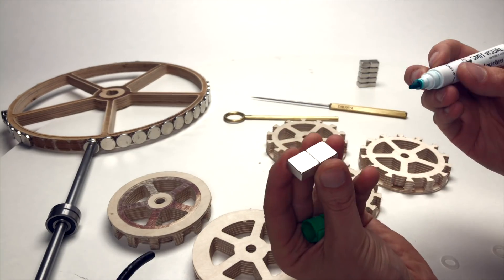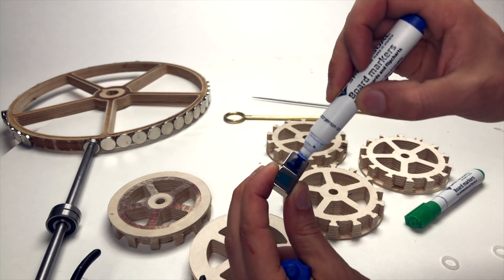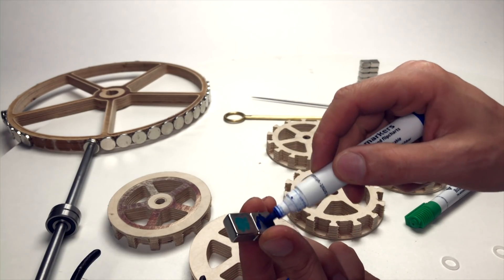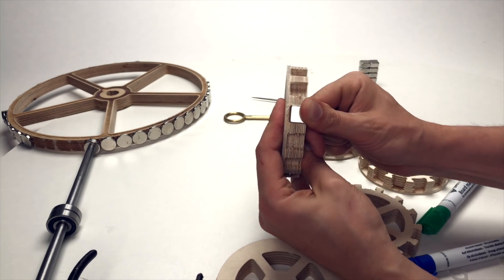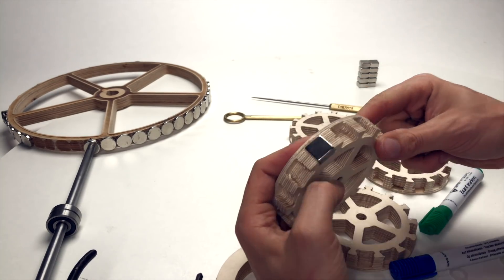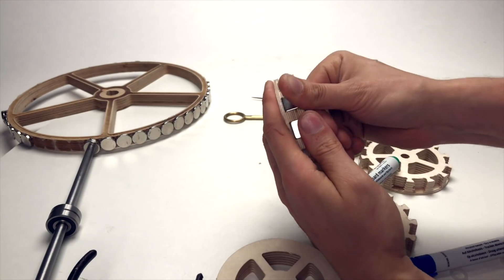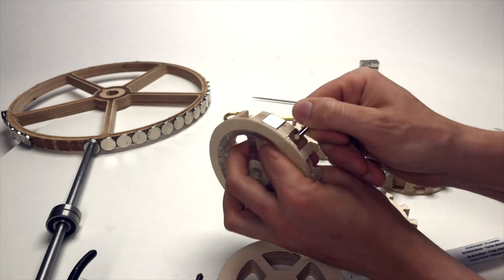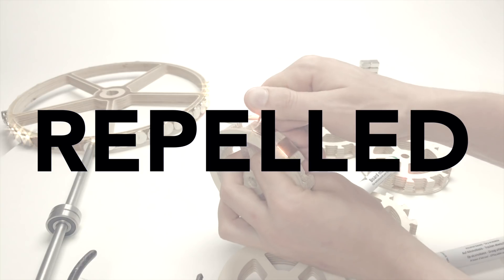So these magnets have a north and a south. I need to put them in this pattern. Opposing sides need to be at opposing sides. That pressure fit is just perfect. So this should be south and this should be north. So it's attracted here and repulsed there.